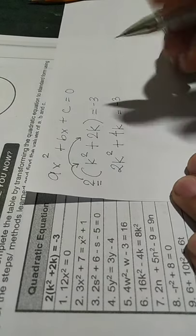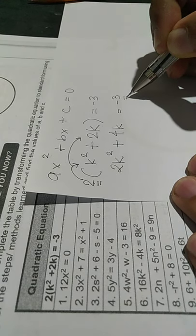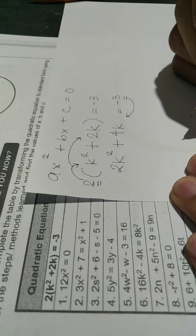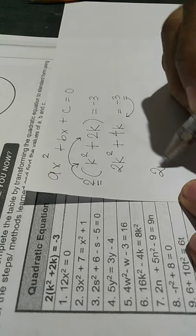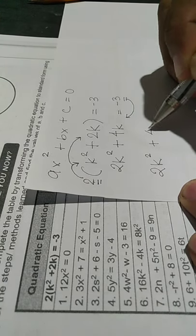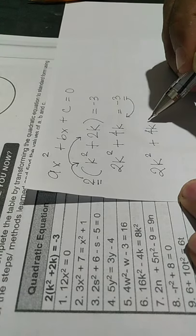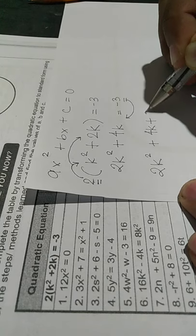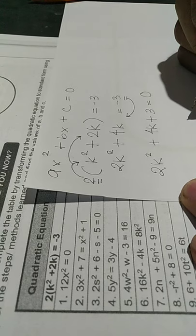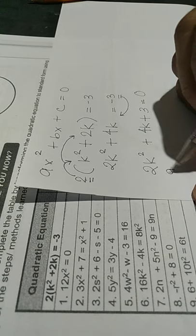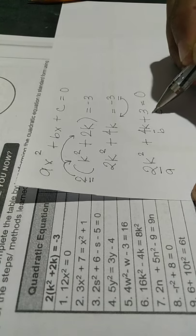Then, move or transpose this negative 3 together with the terms on the other side. So it will become 2kx squared plus 4k. Since it is negative 3, by transposing it will now become positive 3, equals zero. So you have now your A which is 2, your B which is 4, and your C equals 3.